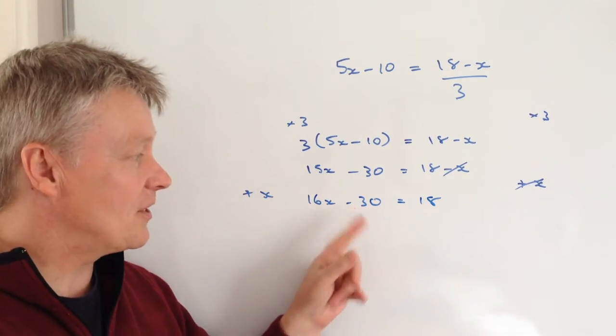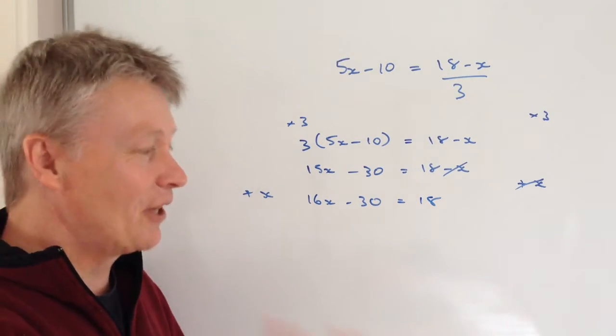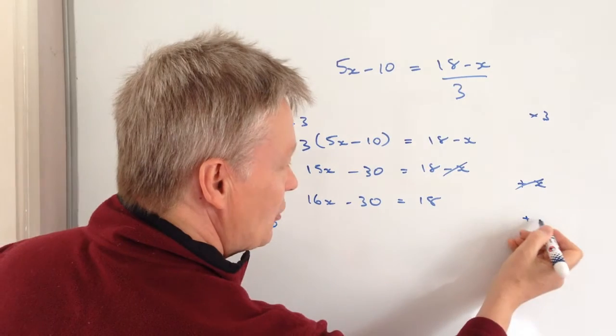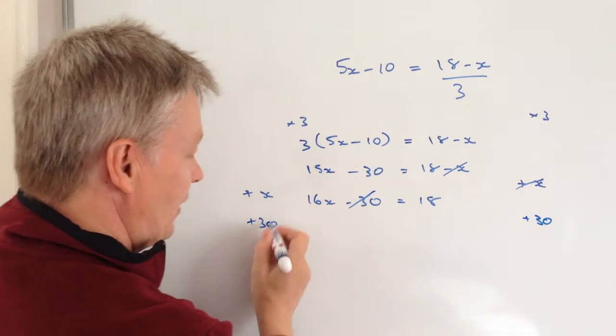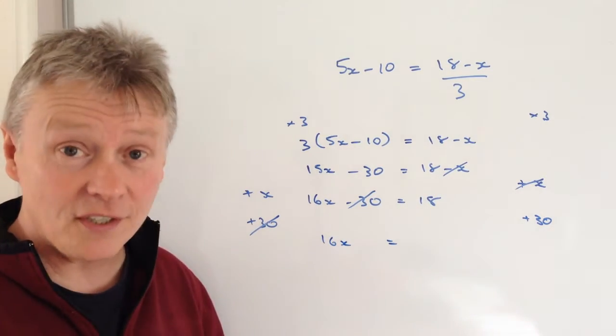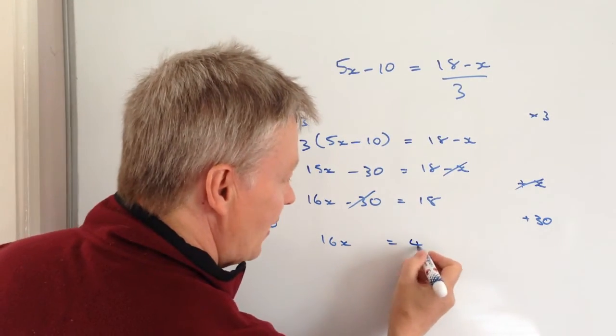And then I've got minus 30, don't want that there, I'm going to get rid of it by adding 30 to both sides, and if I do, it means this bit cancels out, I end up with 16x equals 18 plus 30, and that's going to be 48.